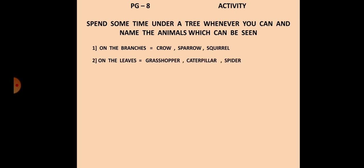You can write according to your own choice. The next one is on the leaves: grasshopper, caterpillar and spider. The third one is on the trunk: ants, squirrel and termites. On the ground we have dog, cat, snail, any other animal which you have seen on the ground you can add them.